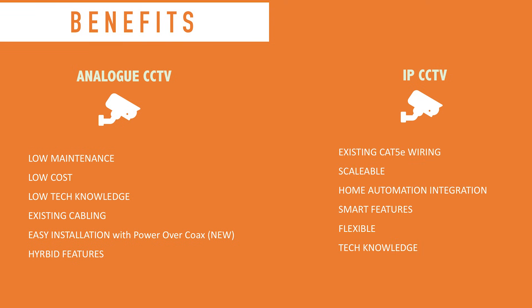IP CCTV works with existing Cat5e wiring if that's what your office or school has. It's a lot more scalable — you can add and take away cameras without having to rewire much, just using the network infrastructure. You've got home automation integration, so for example with a Control 4 or Crestron system you could integrate IP cameras into your single smart device. There are a lot more smart features and it's more flexible, but it does require a little more technical knowledge compared to analog CCTV.